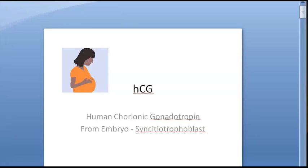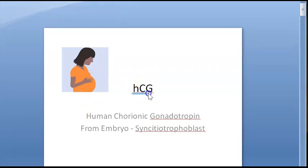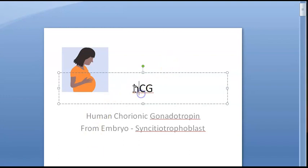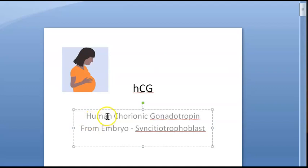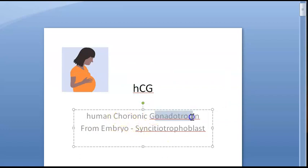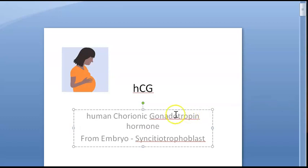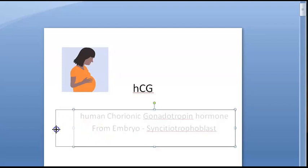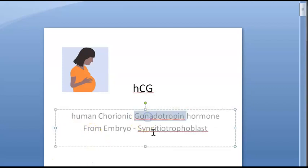In this video we look at HCG — Human Chorionic Gonadotropin. For some reason 'human' is always written in lowercase. Breaking down the name: 'chorionic' means from the placenta, and 'gonadotropin' means something to do with the gonads — the sexual organs. So basically, Human Chorionic Gonadotropin is a hormone.